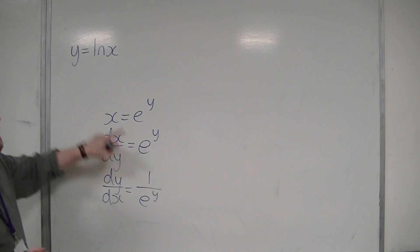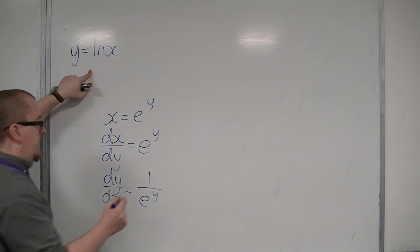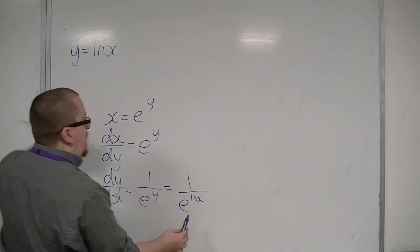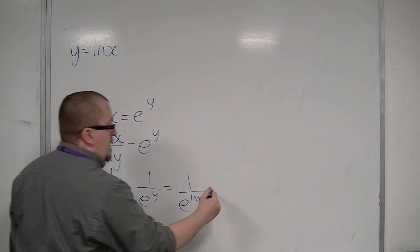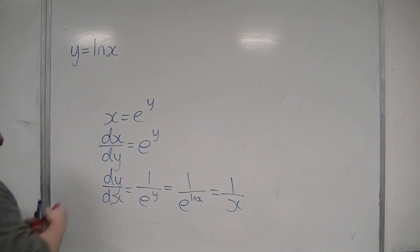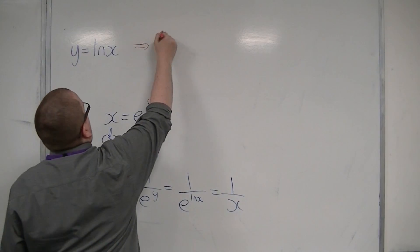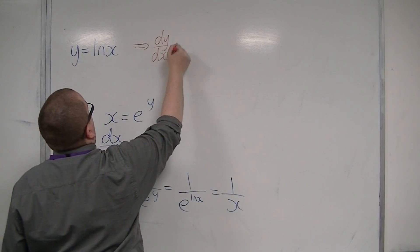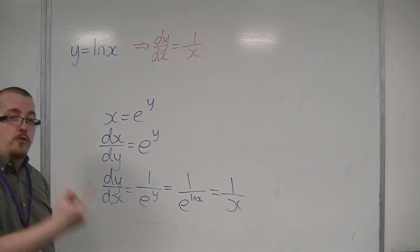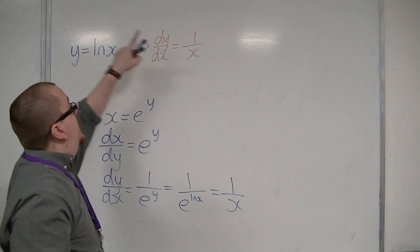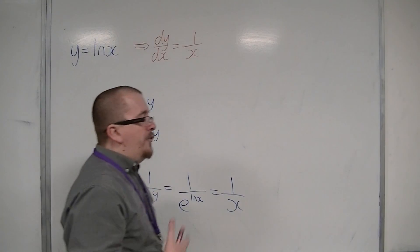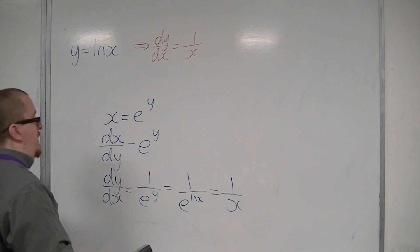But remember, y was log x. So we have 1 over e to the log x. And e to the log x is just x. So actually, dy by dx is 1 over e to the y, is 1 over e to the x. Log x differentiates to 1 over e to the x, and 1 over e to the x integrates to log x.